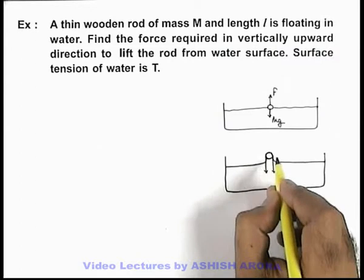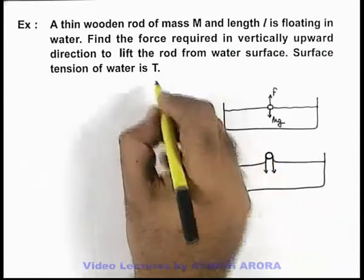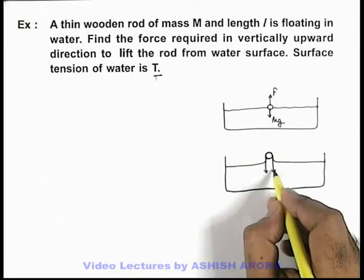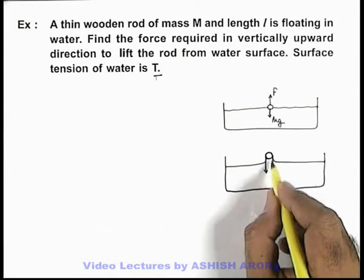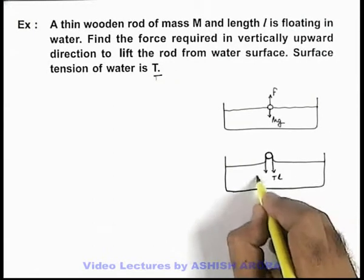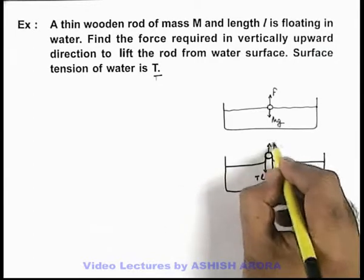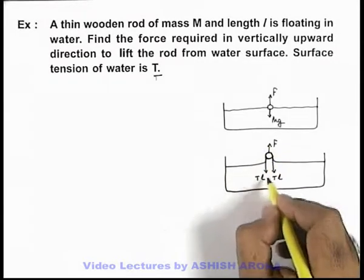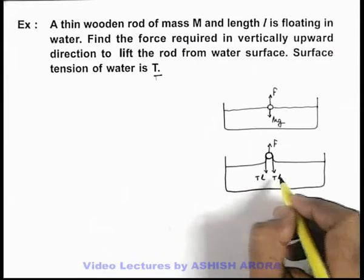And as the length of these edges is l and surface tension is given as T we can say the force applied by the surface tension on the edge of the rod will be TL and TL on the 2 sides, so to lift it we need to balance its weight as well as the force due to surface tension.